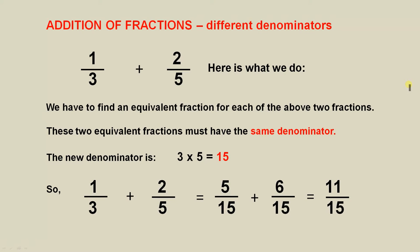Addition of fractions, different denominators. Now here is an example to illustrate what we saw on the previous slide. We are asked to add 1 third plus 2 over 5. Here is what we do. We have to find an equivalent fraction for each of the above two fractions. These two equivalent fractions must have the same denominator.